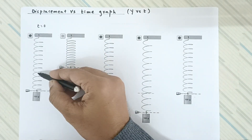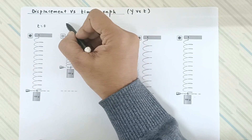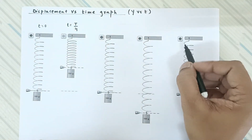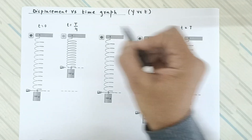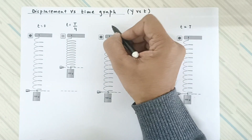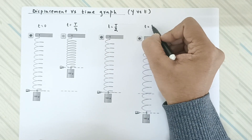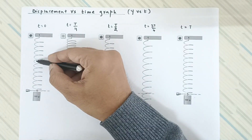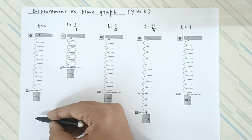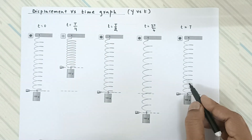After one-quarter of the oscillation the spring-mass system reaches the upper extreme. The time taken to complete one full oscillation is the time period T. So one-quarter oscillation corresponds to time T/4, half oscillation to T/2, three-quarter oscillation to 3T/4, and one complete oscillation to T.